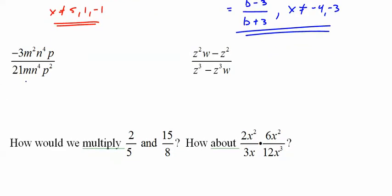A little bit of exponent work to do here. So we handle the numbers first. We end up with negative m. And that is it. But m cannot equal 0, n cannot equal 0, p cannot equal 0.